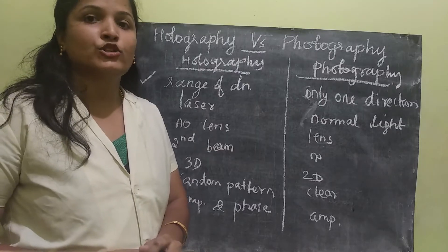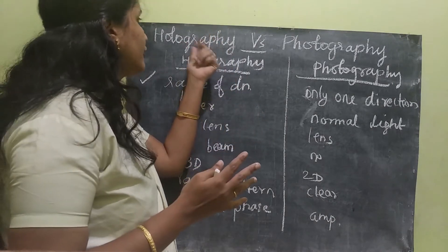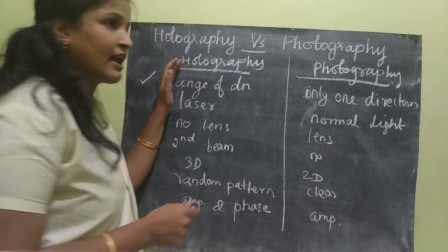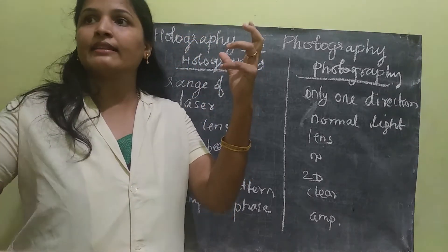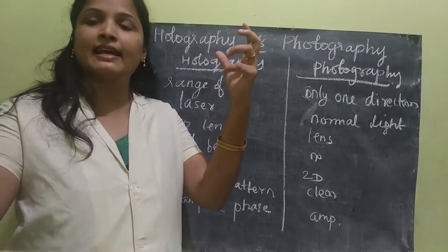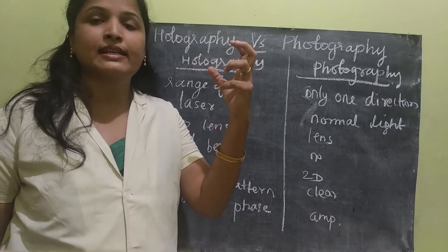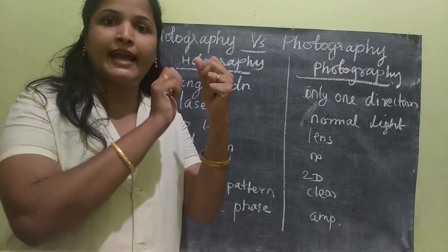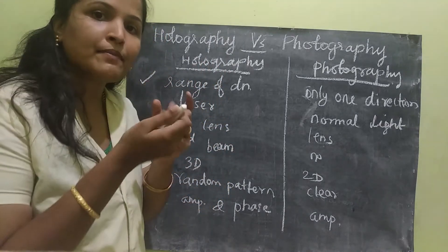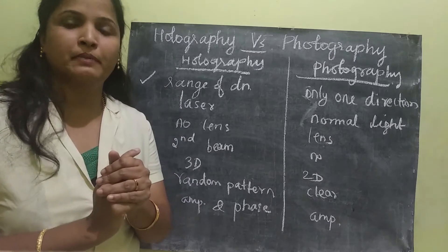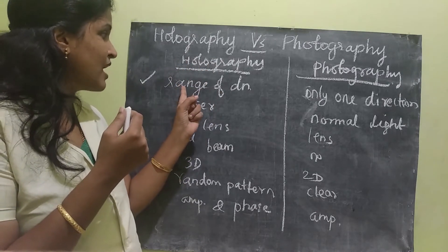The next topic is holography and photography — the differences between them. In holography, a range of directions are used. The laser light is illuminated towards the object, and once illuminated, the object captures the laser light and it will be scattered in all directions. The holograph records all the directional beams, so all the scattered beams are recorded in holography.